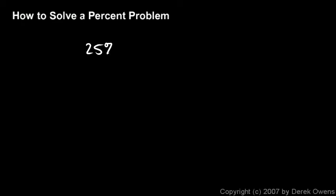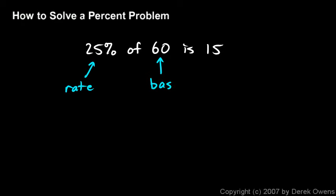Now we'll see how to solve a percent problem. Every percent problem has three parts: the amount, the base, and the rate. For example, 25% of 60 is 15. The percentage is called the rate, the total is called the base, and the piece that is a certain percentage of the total is called the amount.